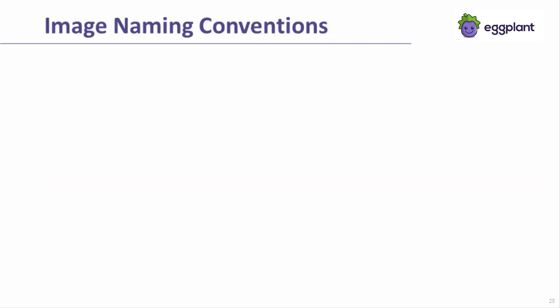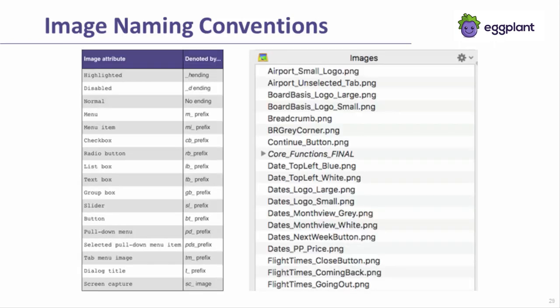Let's look at naming conventions. What's most important is that you simply have one and that people adhere to it. Each automation team uses a different naming convention, and as long as the convention is understood and used regularly, it's a good one. Here are two examples: the first shows how suffixes and prefixes might be used to clarify the type of element an image represents, and the second shows how they could describe the area of an application an image came from and something about its appearance.